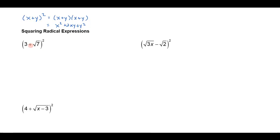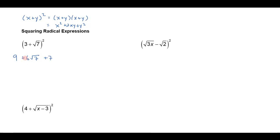So applying that here: I square the 3 to get 9, then I take 3 times √7 which is 3√7, and I double that to get 6√7, and then I square √7 which gives me 7. I'd like to go right to that step, and then I can combine 9 and 7 to get 16 + 6√7.